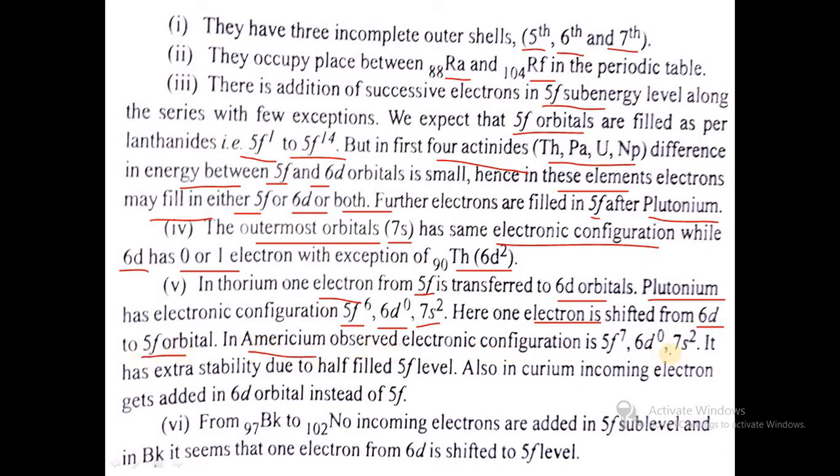In americium, the observed electronic configuration is 5f7 6d0 7s2 for stability because it has extra stability due to half-filled 5f level. In curium, the incoming electron gets added to the 6d orbital instead of the 5f level.